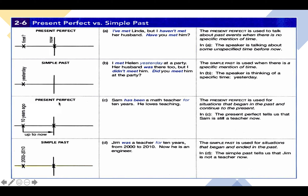For the other situation: 'John was a teacher for 10 years, from 2000 to 2010. Now he is an engineer.' We are in 2019, so we are talking about a time period entirely in the past. We use the simple past because it doesn't continue up to the present.